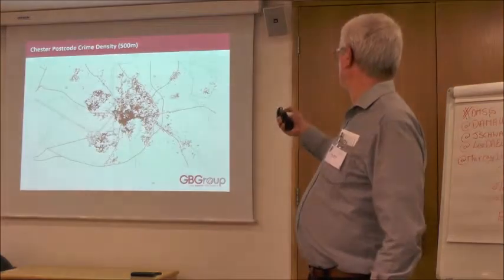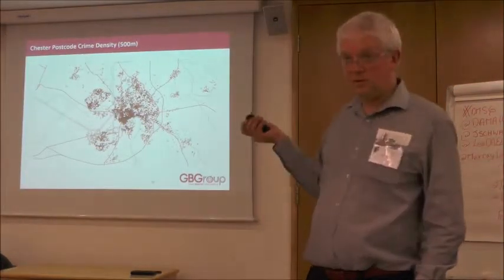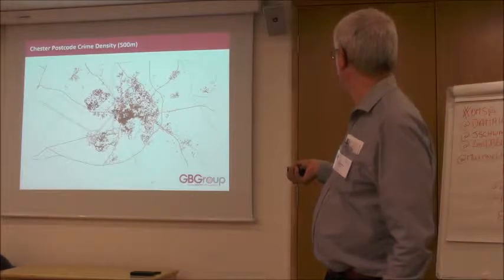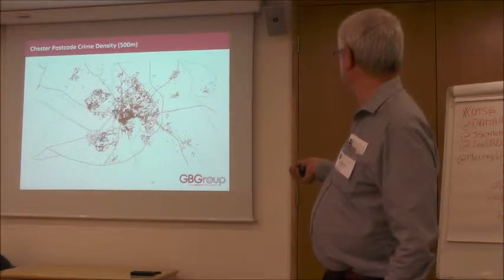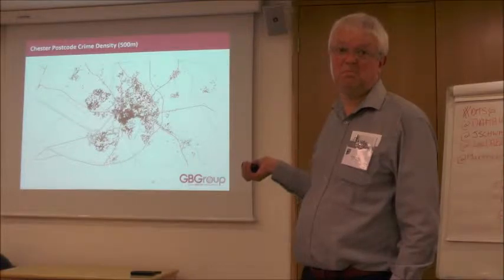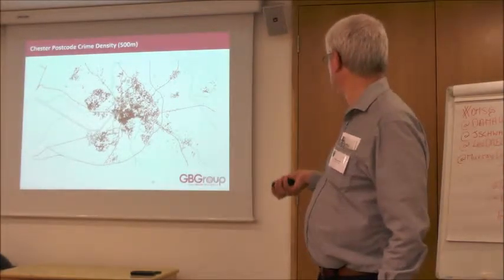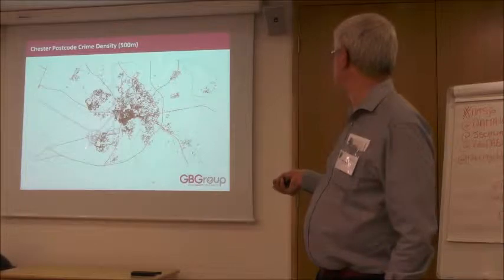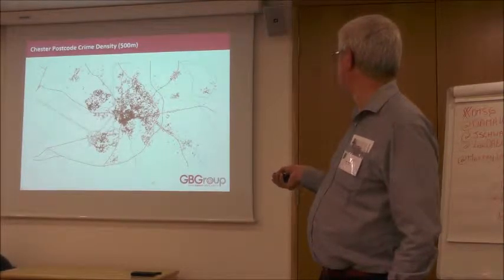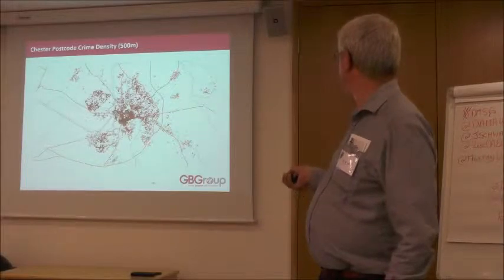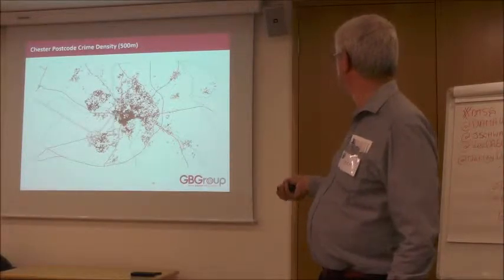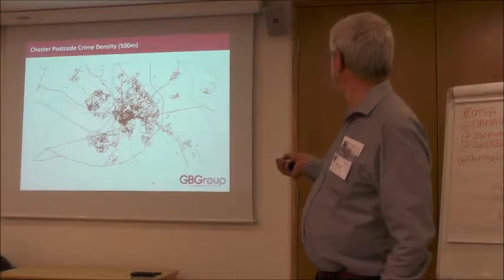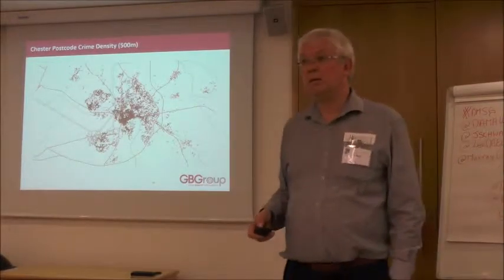Here's another example where I've aggregated crime data around postcode centroids at 500 metres. You've got a lot of crime in the middle of Chester — that's around the pubs and shops where the majority of crime occurs. Then you can find some residential neighbourhoods — this area called Lache is very deprived, in the bottom 1%, and not surprisingly has a lot of crime. Similarly this is a very poor estate. Some affluent suburbs have some little pockets of crime, even in some of the villages, which is quite surprising.